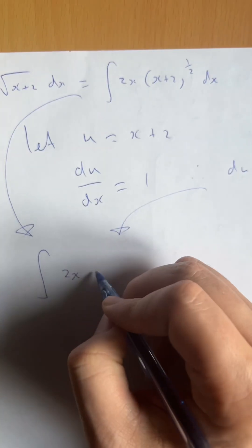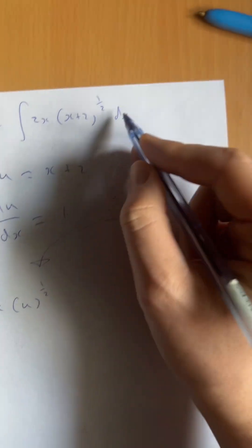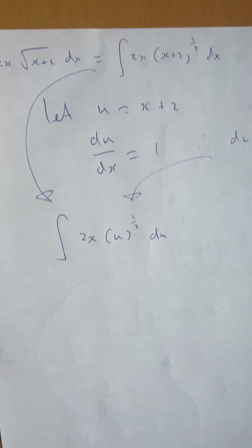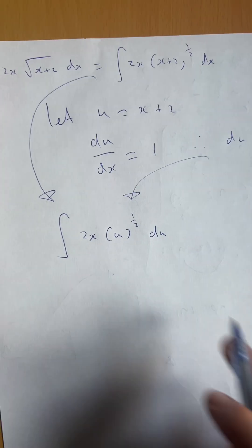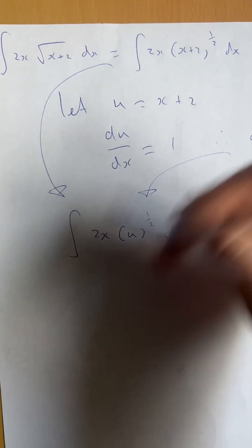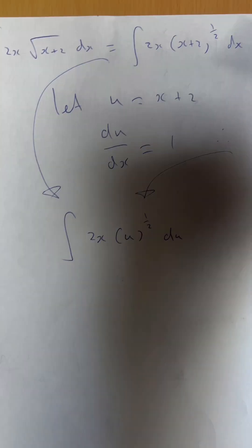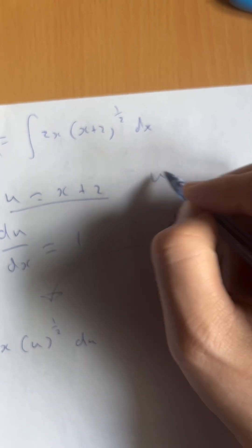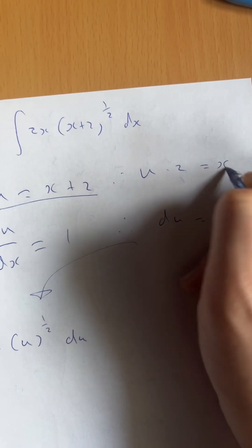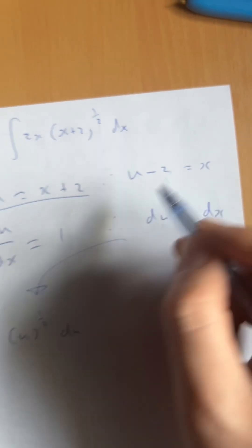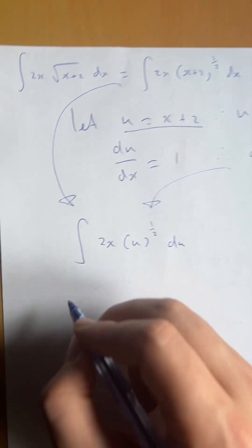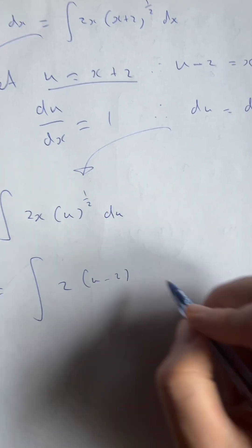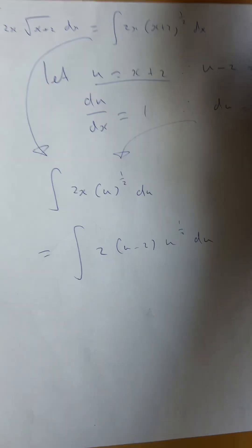So now we can take our integral and write it as the integral of 2x times u to the power of a half du — since dx equals du in this case. You're probably thinking: you've got x times u, so how do you integrate that with respect to u? Usually the x's cancel out in substitution questions, but not here. However, notice that if you subtract two from both sides of the substitution u = x + 2, you get u minus two equals x. So the trick is to go back to the substitution and replace x. We get the integral of 2 times (u minus two) times u to the power of a half du — and now we've eliminated all the x's.